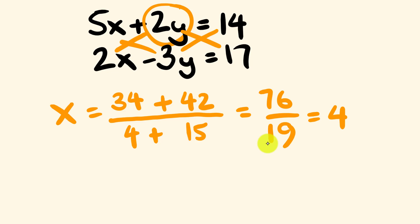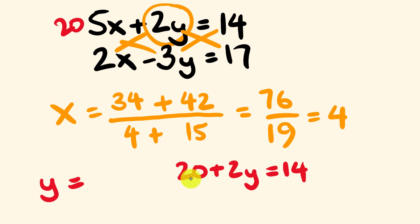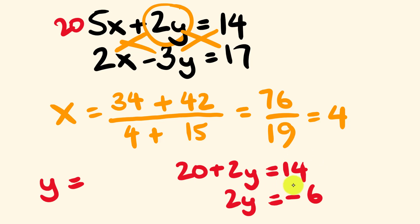Now let's go through and solve for y. We substitute x equals 4 into the first equation: 5x plus 2y equals 14. 5x becomes 20. So we have 20 plus 2y is equal to 14. Taking 20 from both sides, we're left with 2y is equal to 14 minus 20, which is negative 6. So y is equal to negative 6 divided by 2 — y is equal to negative 3.